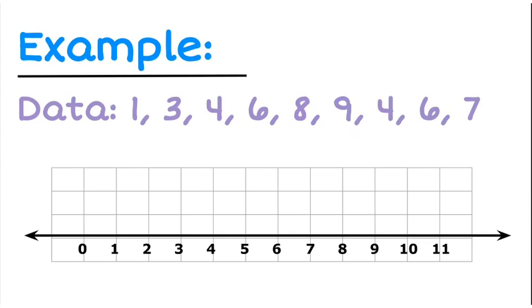So here's an example. We've got a set of data. So in terms of the dot plot, we just want to draw the data as it is.